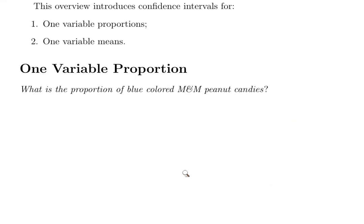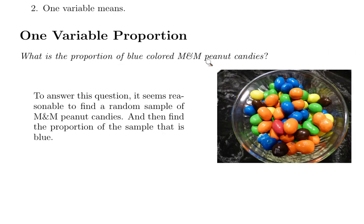Let's begin with a simple example. What's the proportion of blue colored M&M peanut candies? A natural place to begin would be to take a sample of M&M peanut candies and count up the number of blue candies and compare that to the total number in the sample.